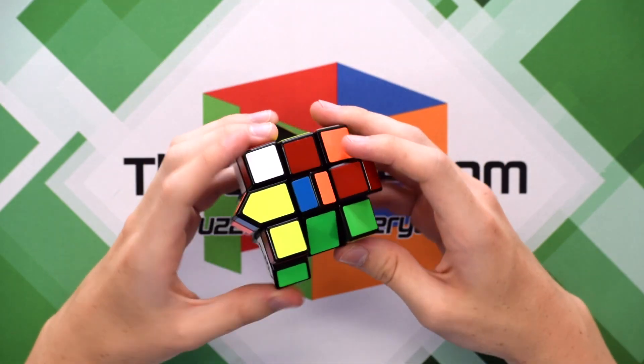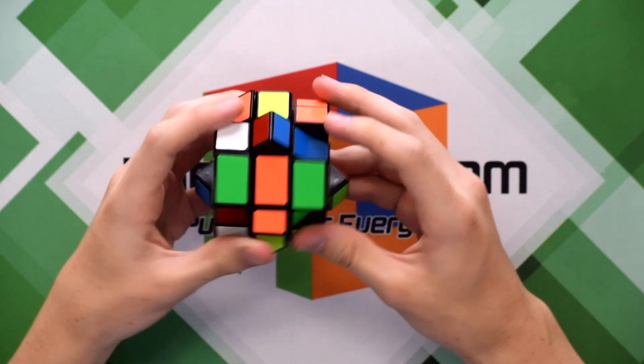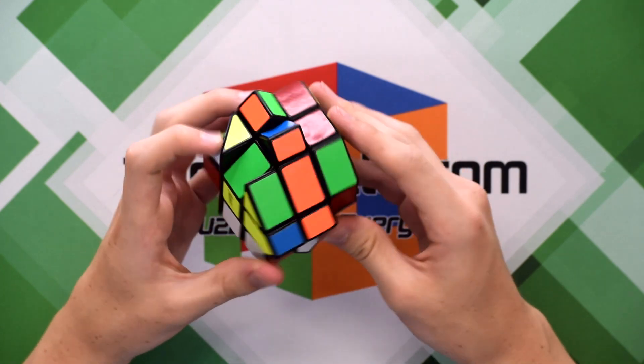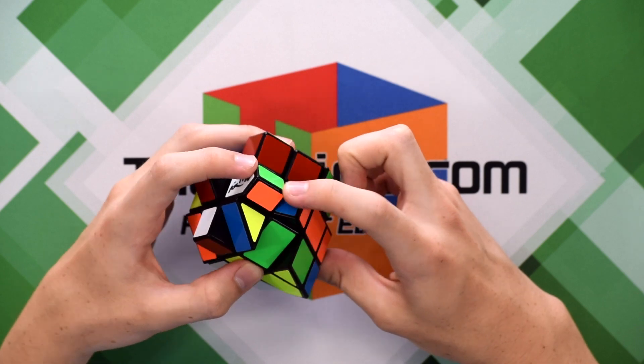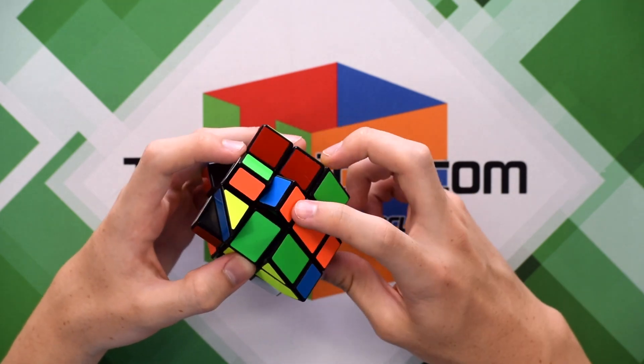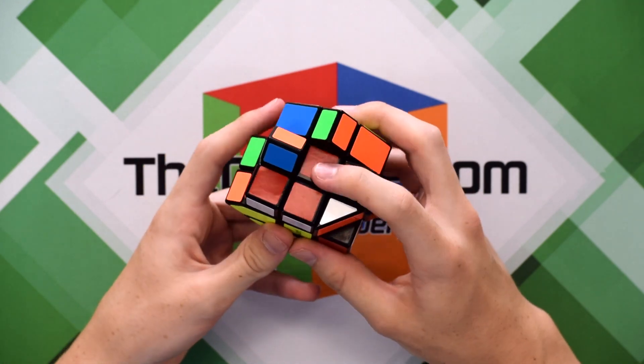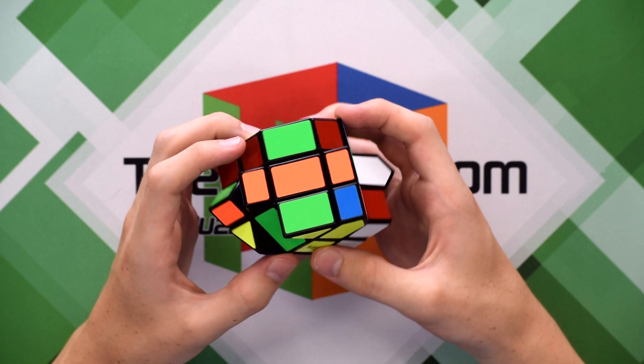The solve is actually fairly simple. There's not really anything out of the ordinary. The only thing you really have to keep in mind throughout the solve is the center orientation. So you have to make sure that the edges are aligned because some of the center pieces have two colors on them. For example, this blue and orange center. I usually like to start with the blue and orange center because it is opposite of a red center. So that way I don't have to deal with center orientation when I'm solving the last layer.